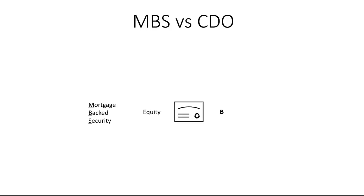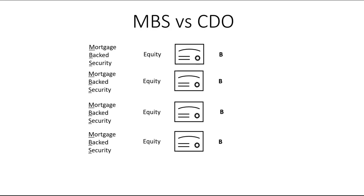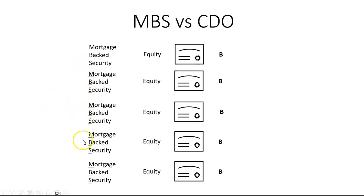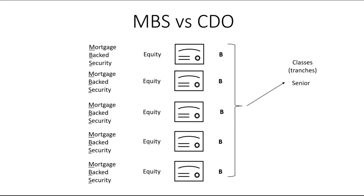The idea emerged: we grouped mortgages and converted them into tranches rated as safe, kind-of-safe, and not-so-safe. Why couldn't we do the same with the equity tranches of multiple mortgage-backed securities? Take five separate MBSs, take the equity tranche of each, group them, create a new asset with a senior tranche, a mezzanine tranche, and an equity tranche — and that is what we call a CDO, a collateralized debt obligation.